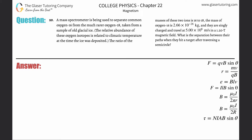Number 20. A mass spectrometer is being used to separate common oxygen-16 from a much rarer oxygen-18 taken from a sample of old glacial ice. The ratio of the masses of these two ions is 16 to 18, and the mass of oxygen-16 is 2.66 times 10 to the minus 26 kilograms. They are singly charged and travel at 5 times 10 to the 6 meters per second in a 1.2 tesla magnetic field. What is the separation between their paths when they hit a target after traversing a semicircle?